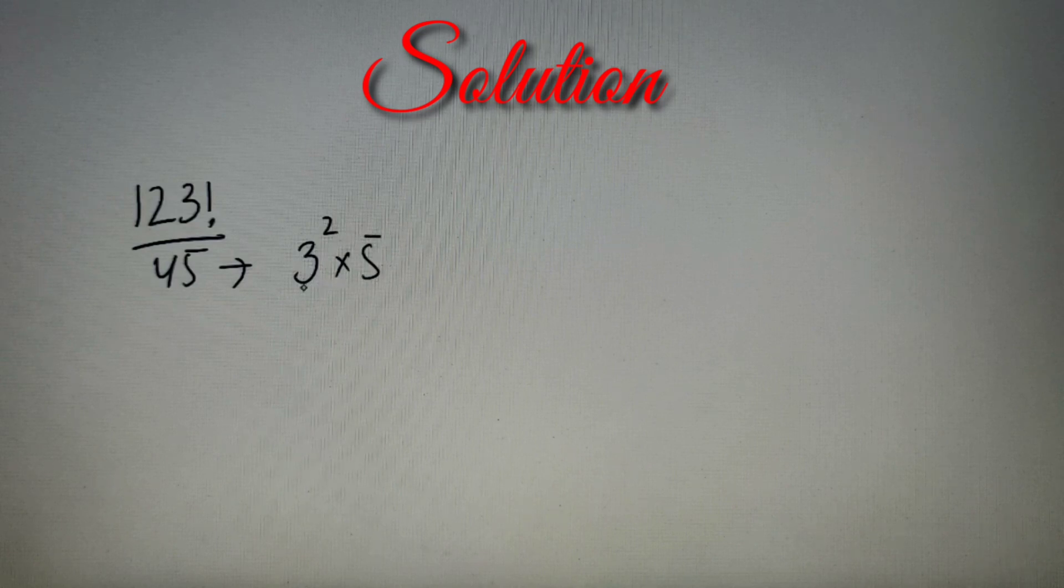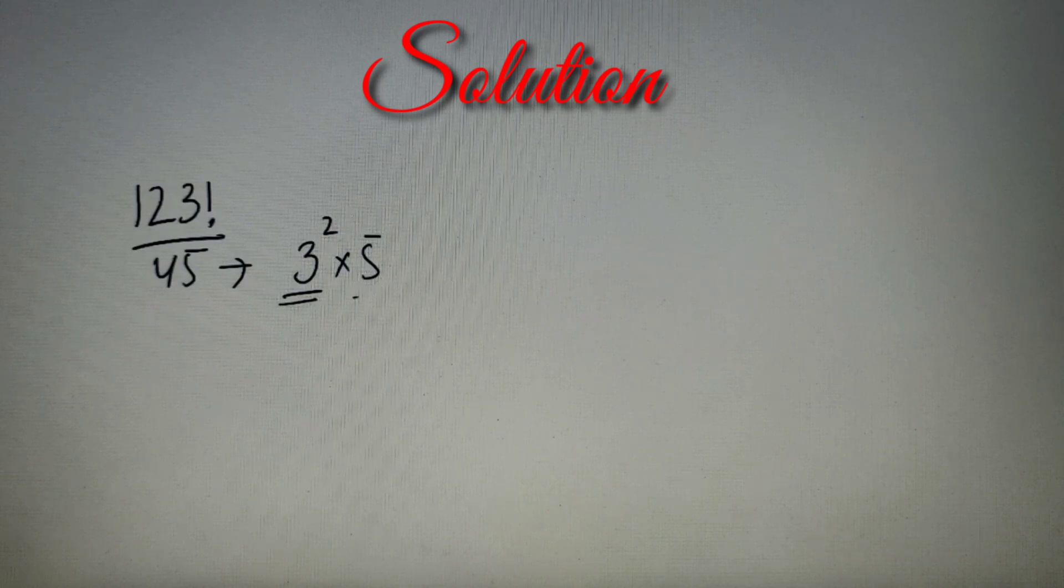So the second step will be to find out the highest power of 3, then divide it by 2, then find out the highest power of 5, and then check the lowest number because that will be our answer.